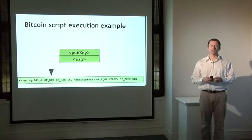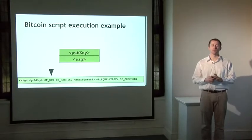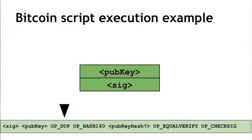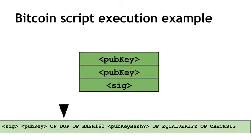So after we've pushed those two values onto the stack, we're going to start executing the second half of the script, which was specified by the sender of the coins. So this is the script-pub-key component of the script. And now we're going to start to actually manipulate some of those values on the stack. So this duplicate instruction, OP_DUP, says simply take the value that's on the top of the stack, pop it off, and then write two copies back to the stack. So we're just going to duplicate that public key.